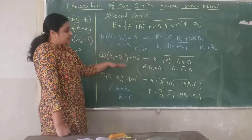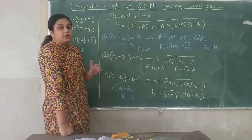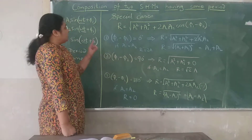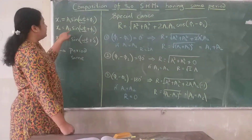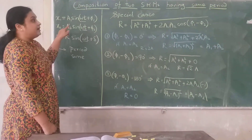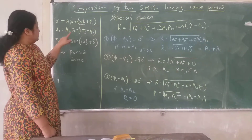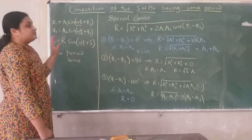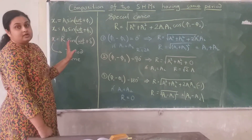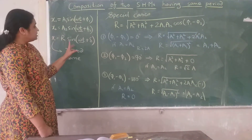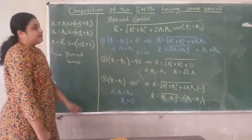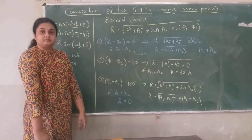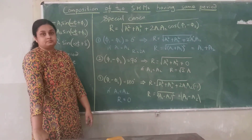So these are the three special cases. When two waves add up, the resultant is also a simple harmonic motion with the same period. Thank you.